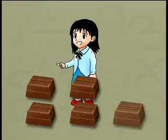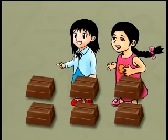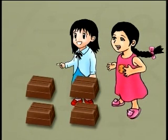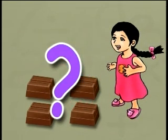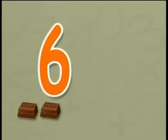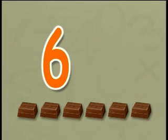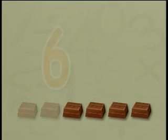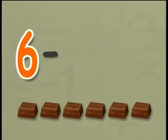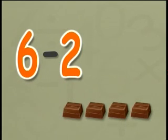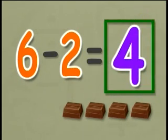Carina ate 6 pieces of chocolate. Julia ate 2 pieces of chocolate less than Carina. How many pieces of chocolate did Julia eat? Carina ate 6 pieces and Julia ate 2 less. To find the number of pieces Julia ate, we subtract 2 from 6, giving an answer of 4. So, Julia ate 4 pieces of chocolate.